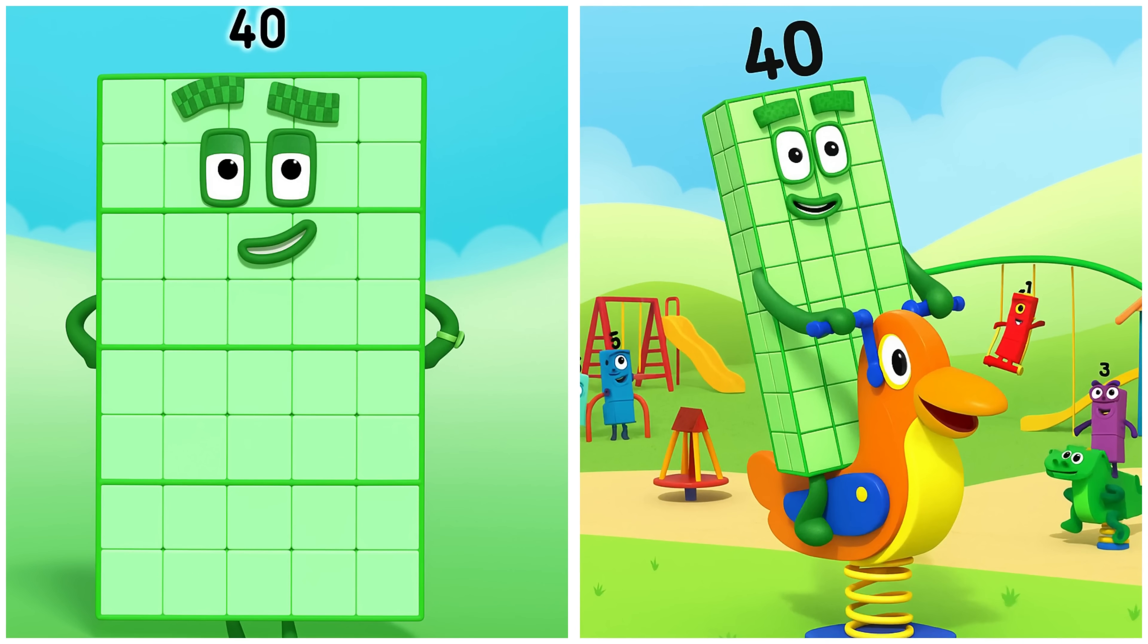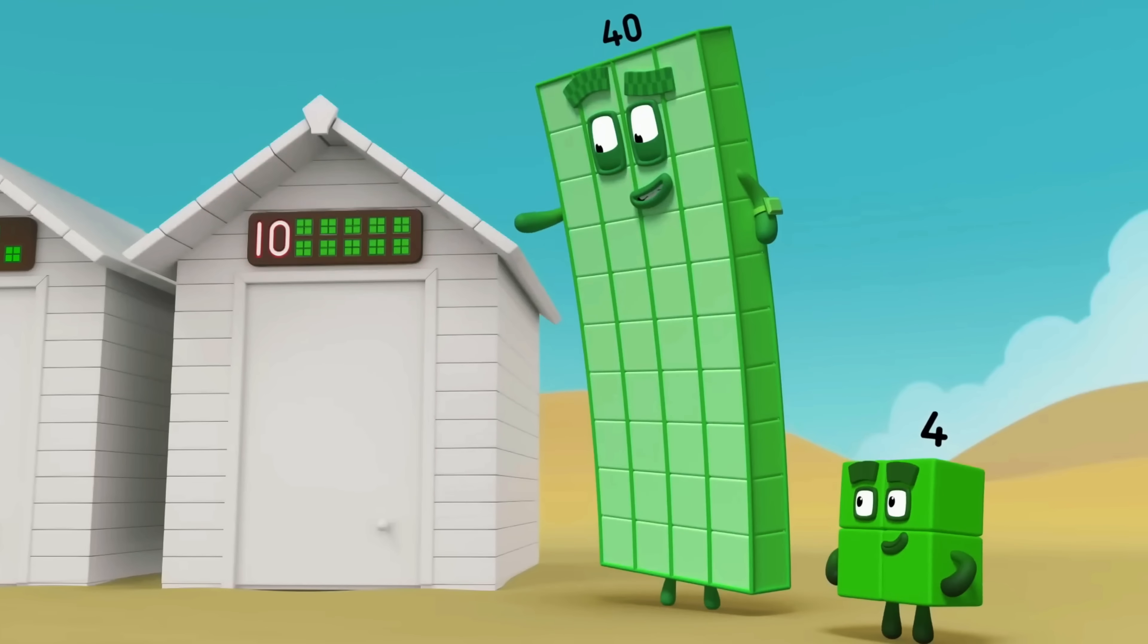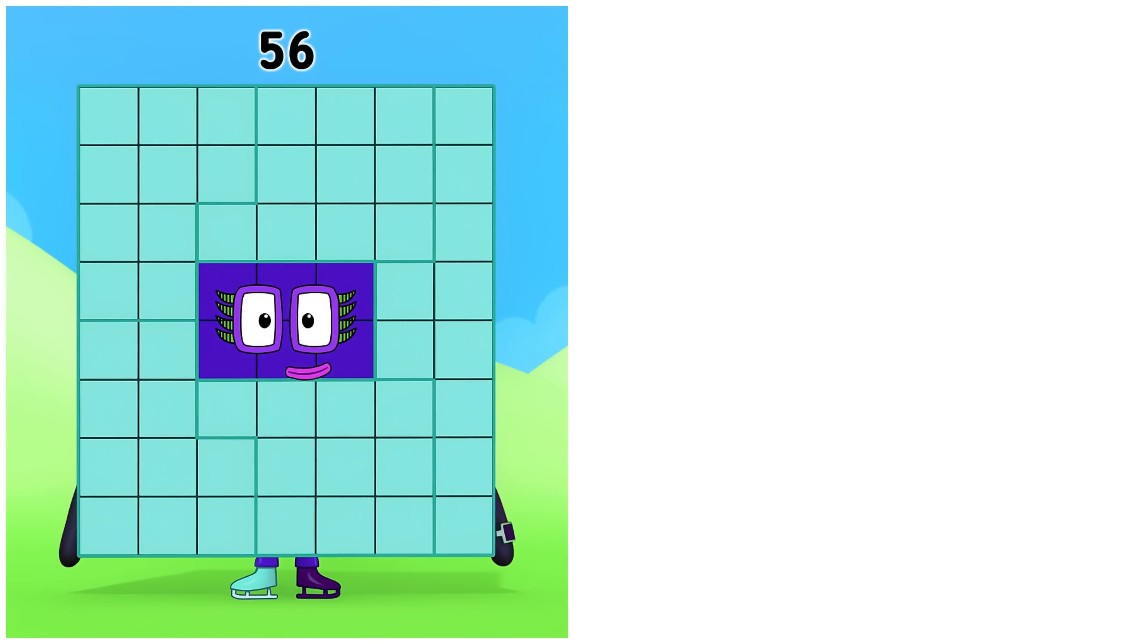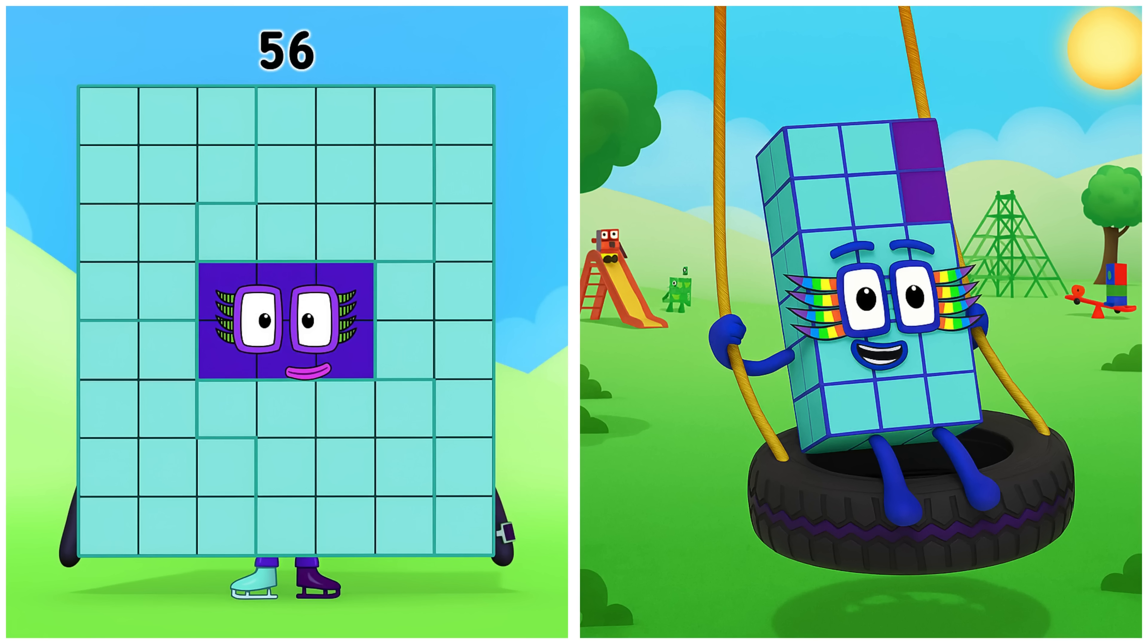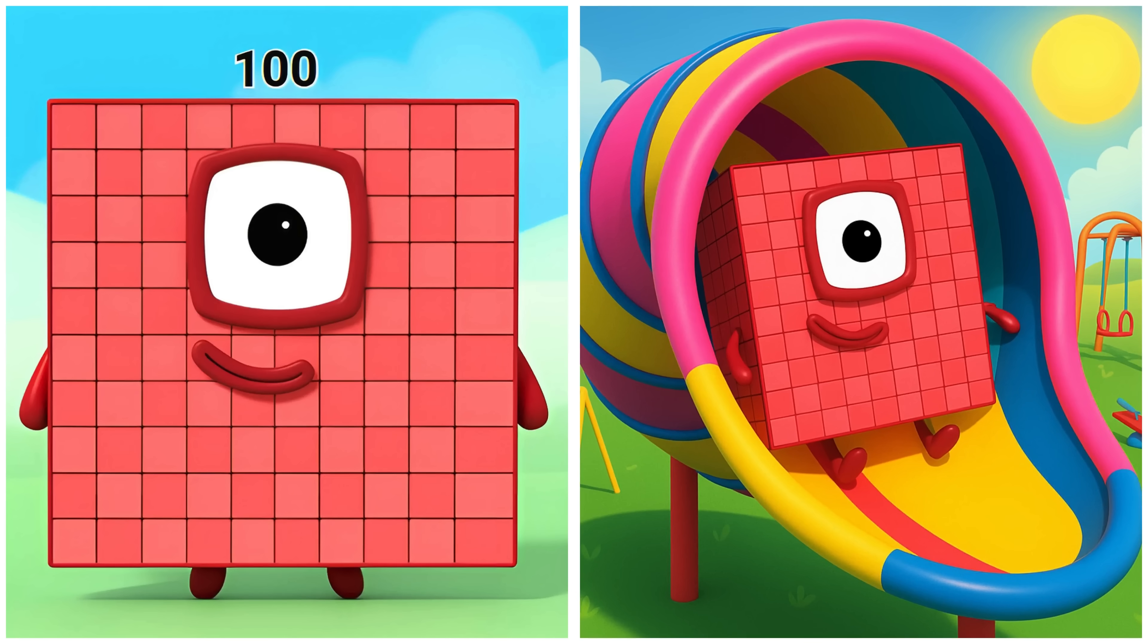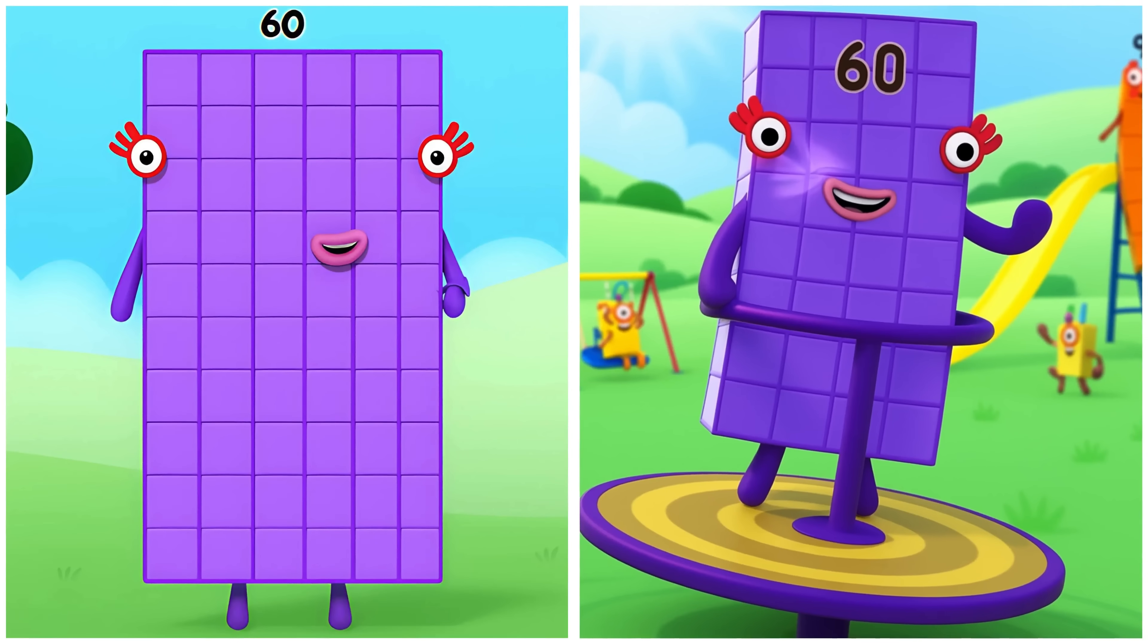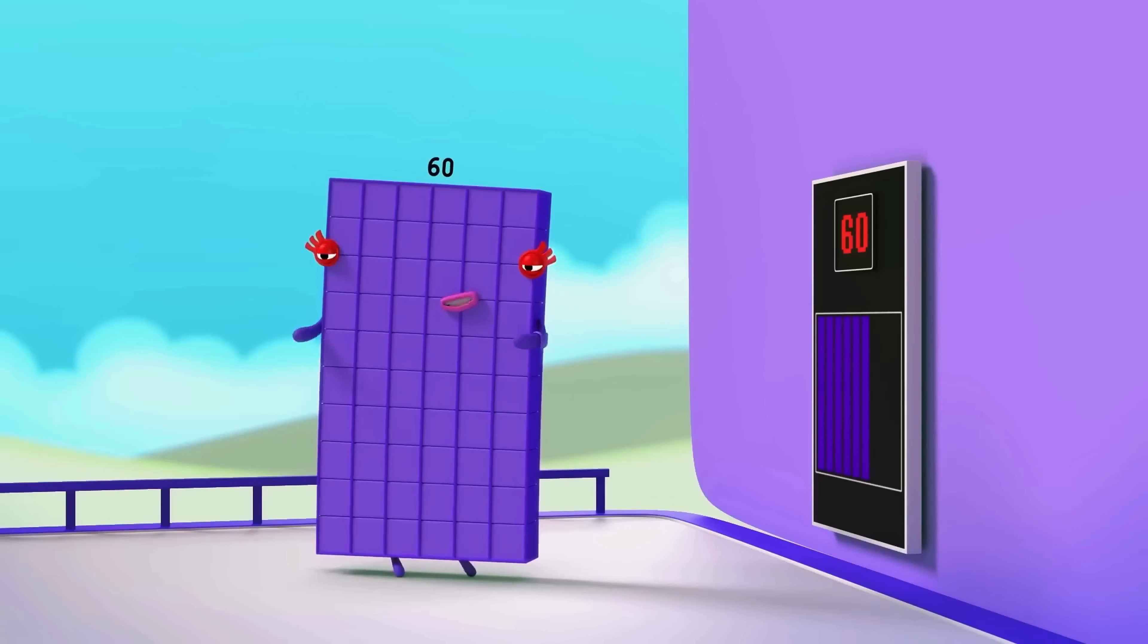Forty. Forty rides the horse spring with a big smile. I'm ten-fours. And this is the tenth beach hut. Fifty-six. Fifty-six swings joyfully on the tire swing. Hundred. Hundred glides down the slide. On this place, tens hit. Sixty. Sixty bounces high on the trampoline. You'll see that dice again.